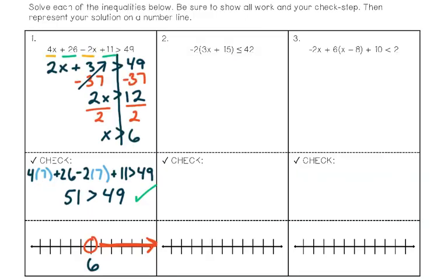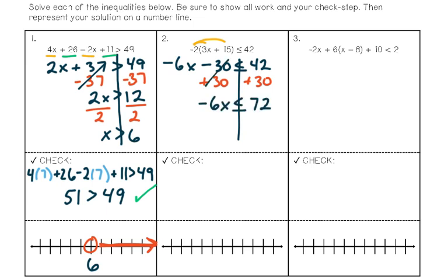Let's go back to example two with the distributive property — I know that because there's a number next to parentheses. The distributive property tells me to multiply negative 2 to each term inside the parentheses, giving negative 6x plus negative 30. I then add 30 to both sides, giving negative 6x is less than or equal to 72. Dividing both sides by negative 6, I get an answer — but I've made two mistakes. First, I needed to flip the inequality sign because I divided by a negative. Second, 72 divided by a negative should give a negative quotient.